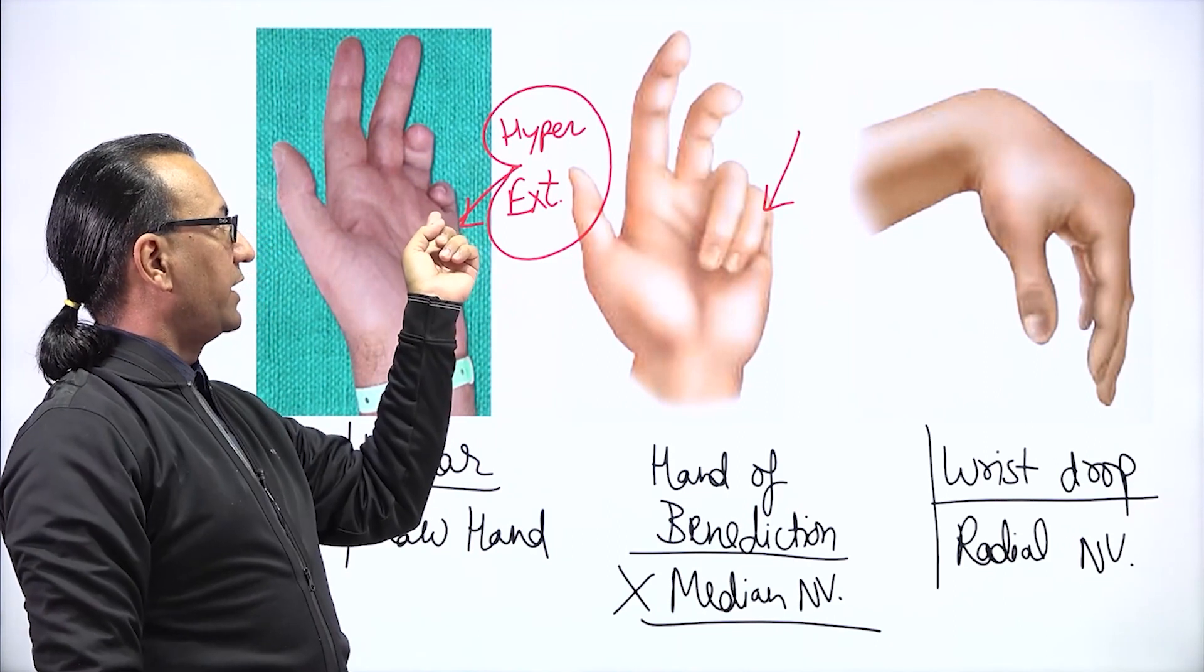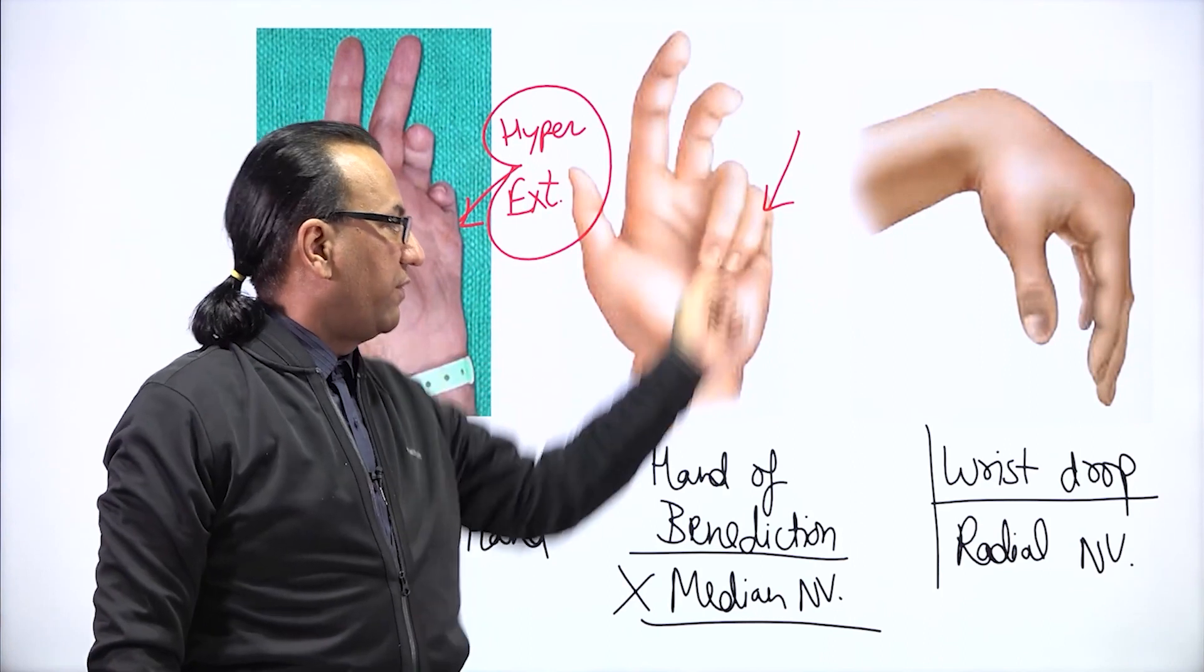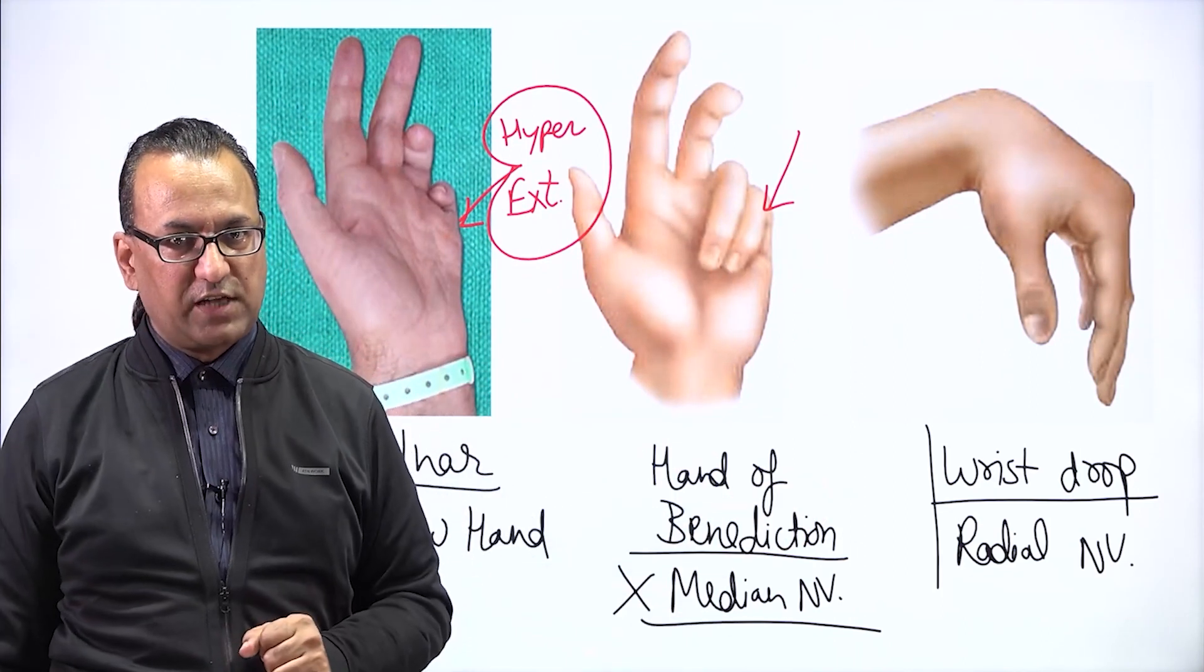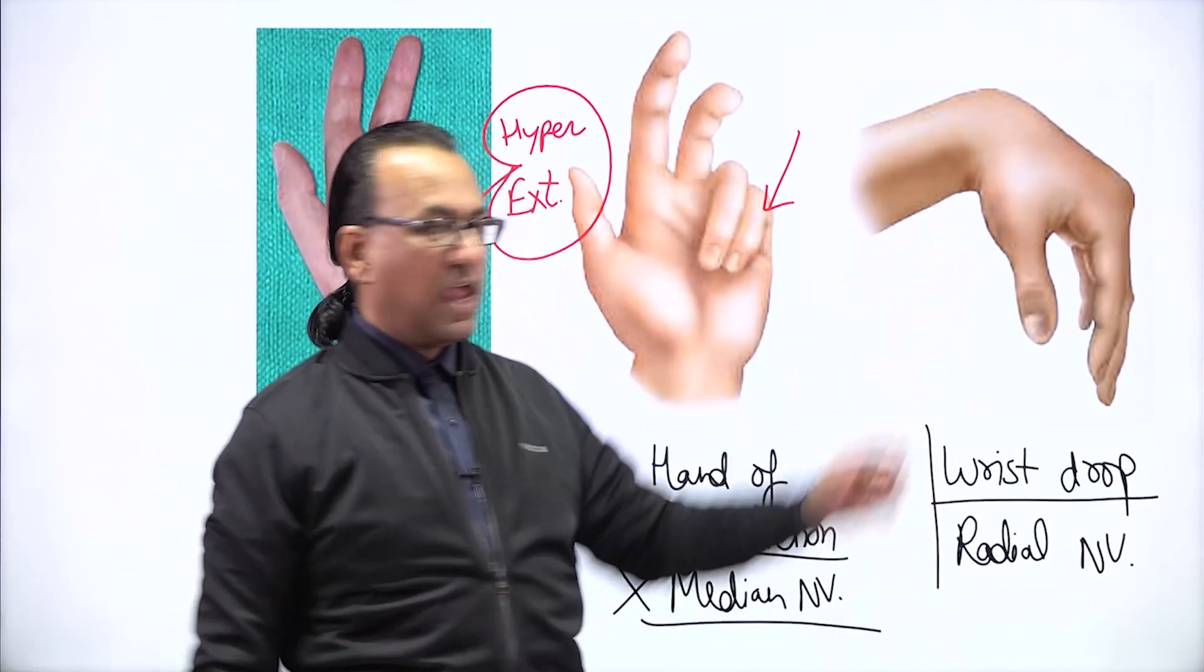If MCP joint is in hyperextension, goes more in favor of ulnar claw hand, and if that is missing, it goes more in favor of the median nerve injury. And of course, wrist drop, loss of wrist extension, muscles like ECRL may not be working, radial nerve injury evident immediately.